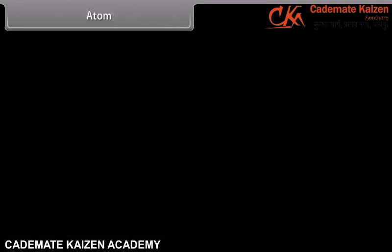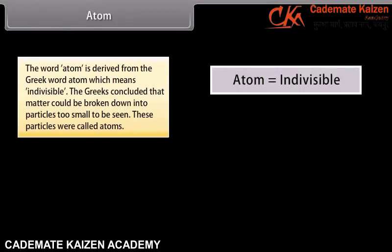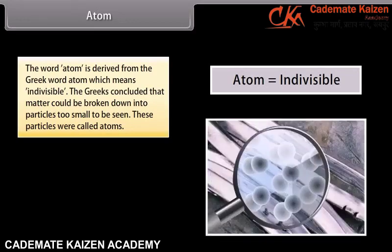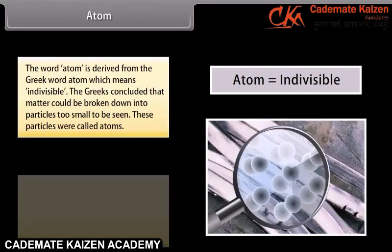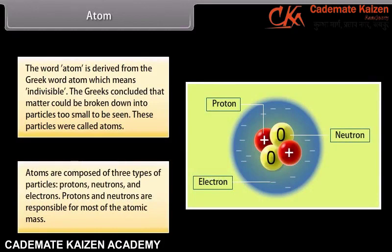Atom. The word atom is derived from the Greek word 'atom', which means indivisible. The Greeks concluded that matter could be broken down into particles too small to be seen. These particles were called atoms. Atoms are composed of three types of particles: protons, neutrons and electrons.